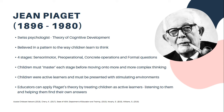Jean Piaget believed that children think differently than adults and proposed the stage theory of cognitive development. He believed that there is a pattern to the way children learn to think, and this pattern occurs in four stages. His firm belief was that children must master each stage before moving to the next. As a child matures, they pass through each stage into more complex thinking. This resulted in thinking that children at an early age can't solve complex problems. However, in recent times, the successful implementation of educational approaches such as Reggio Emilia have proven that children can indeed perform complex cognitive processes. He believed that children must be presented with stimulating environments in order to explore, discover and experiment. Educators can apply his theory by treating children as active learners, by listening to them and helping them find their own answers.